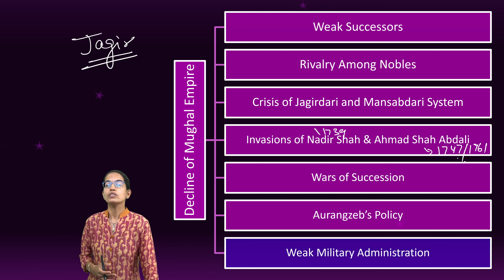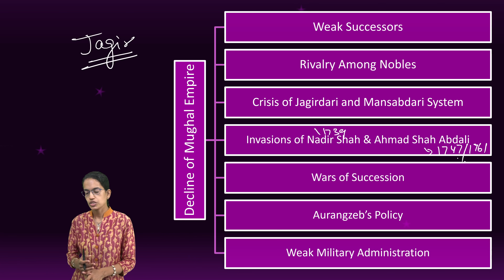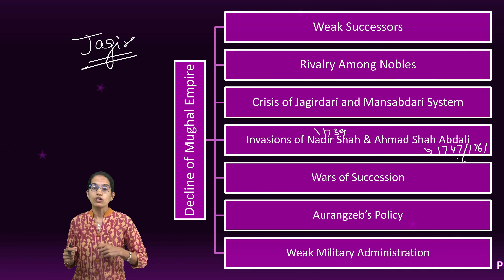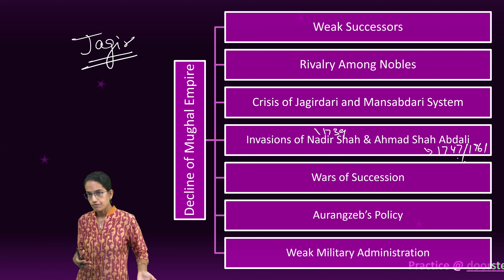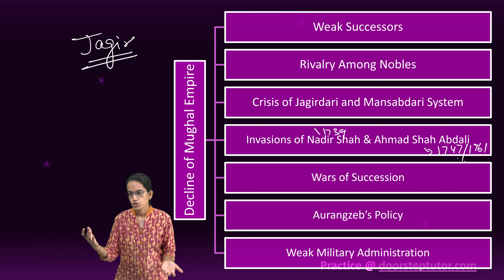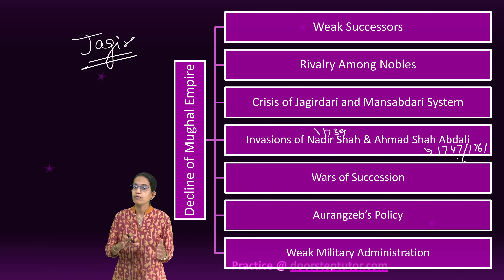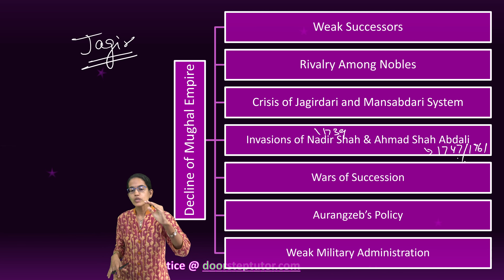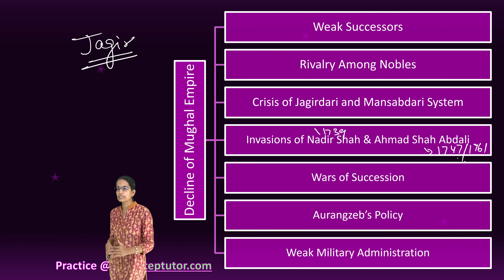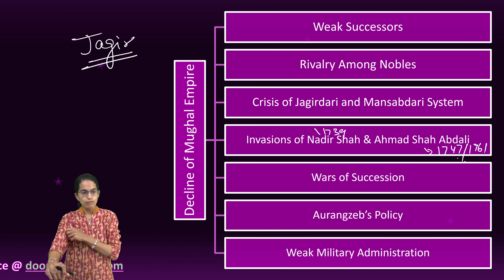Lastly, and not the least, was the weak military administration. The equipment was not modernized — outdated equipment and outdated technology was used — and even the navy was not maintained properly. Those were some of the important reasons that led to the downfall of the Mughal Empire.